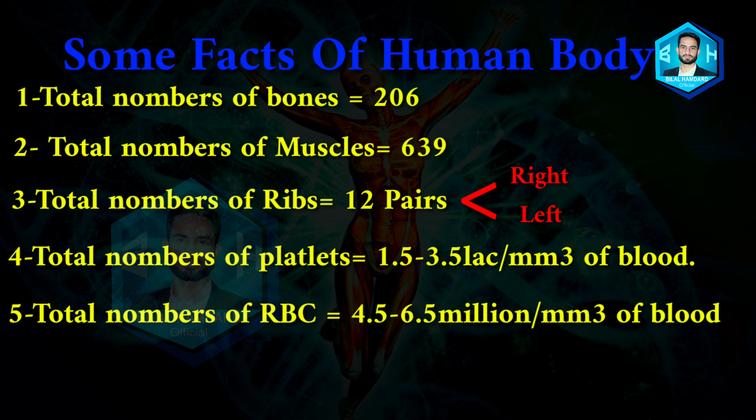Number five: total number of red blood cells or erythrocytes is 4.5 to 6.5 million per millimetre cube of blood. In the human body, the red blood cells — in one milliliter cubic of blood there are 4.5 million to 6.5 million.